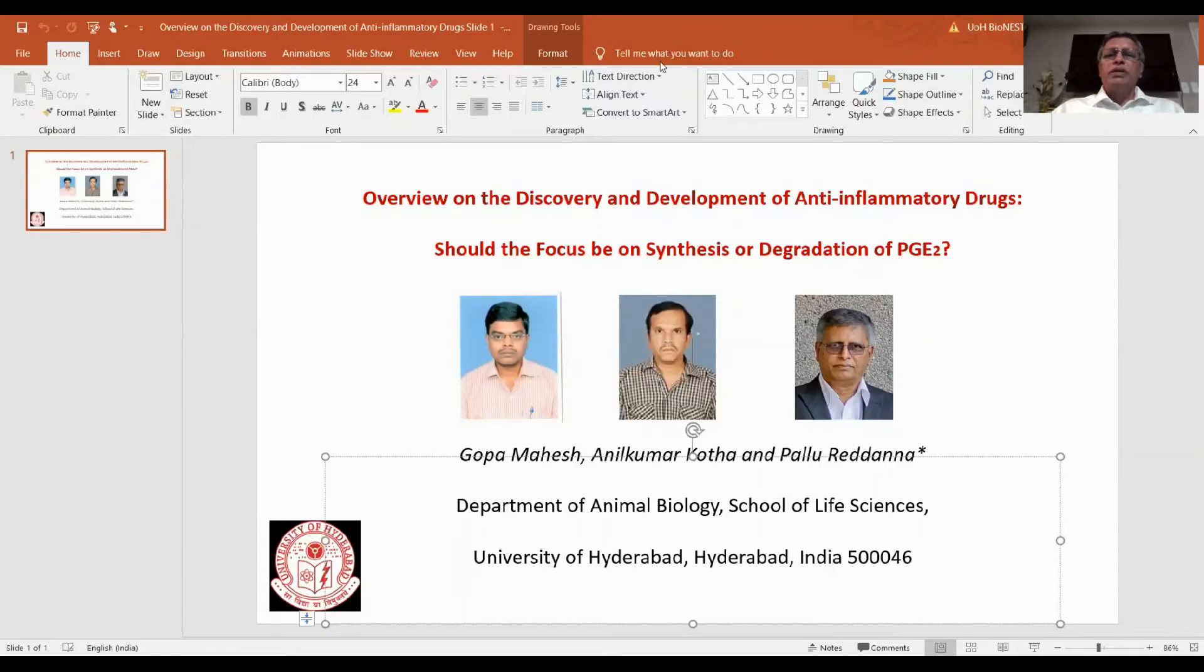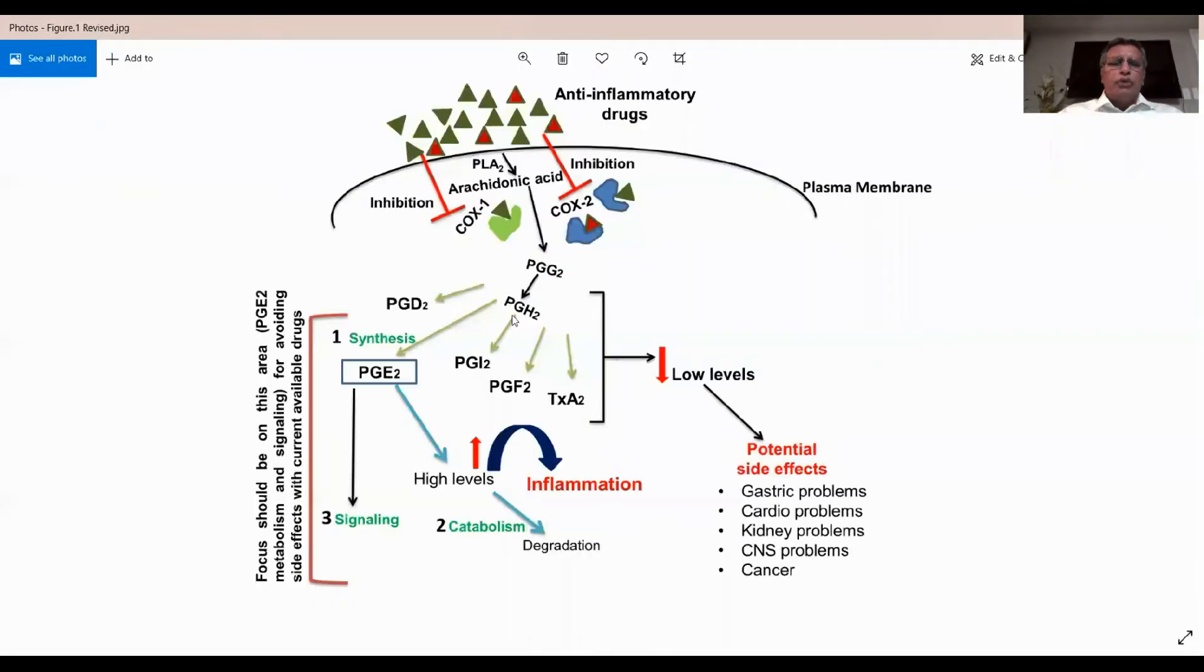Let me share the first figure. As you can see, prostaglandin E2 is the major mediator of inflammation. The inhibition by the non-steroidal anti-inflammatory drugs which are in the market or the COX-2 specific drugs in the market not only inhibit prostaglandin E2 but also inhibit other prostanoids which are cytoprotective in nature.